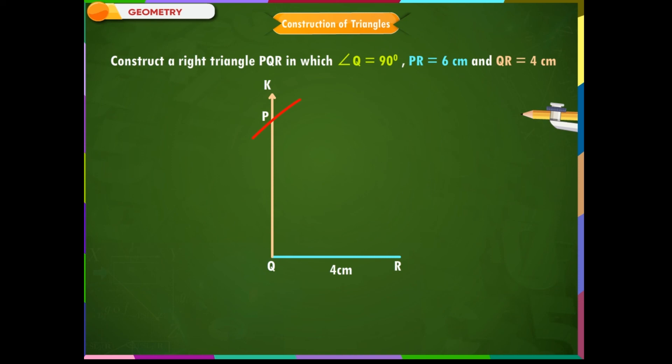Step 4: Join P and R. Now, we get the required triangle.